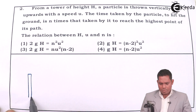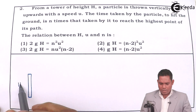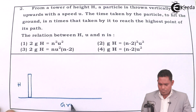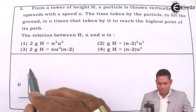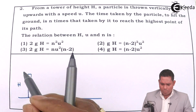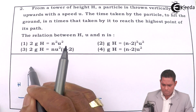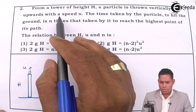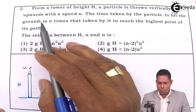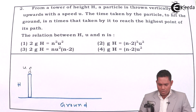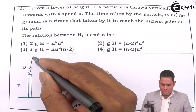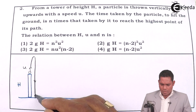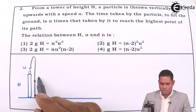Suppose this is a tower. From the top of the tower of height h — this height is h, this is the ground. A particle is thrown vertically upward with a velocity u. It will go up, follow this path, and fall to the ground. The time taken by the particle to hit the ground is t1.